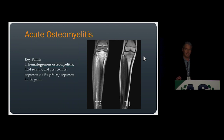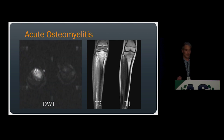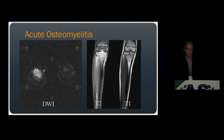The next key point: in imaging hematogenous osteomyelitis, fluid-sensitive and post-contrast sequences are the primary sequences used for diagnosis — in distinction to the T1 sequence used in direct spread. In hematogenous osteomyelitis, there's another sequence that's very helpful: diffusion-weighted imaging, or DWI.